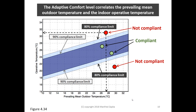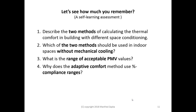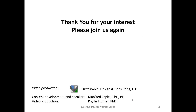That covers everything we wanted to discuss today. As a self-learning assessment, here are some questions: describe two methods of calculating thermal comfort in buildings with different space conditioning; which method should be used in indoor spaces without mechanical cooling; what is the range of acceptable PMV values; and why does the adaptive comfort method use percent compliance ranges and not specific values? Thank you very much for your interest and we hope to see you again for one of our other short videos.